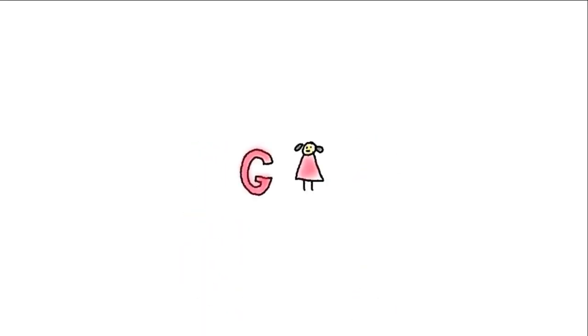G for girl? No, g for the acceleration of free fall — 9.81 metres per second squared.